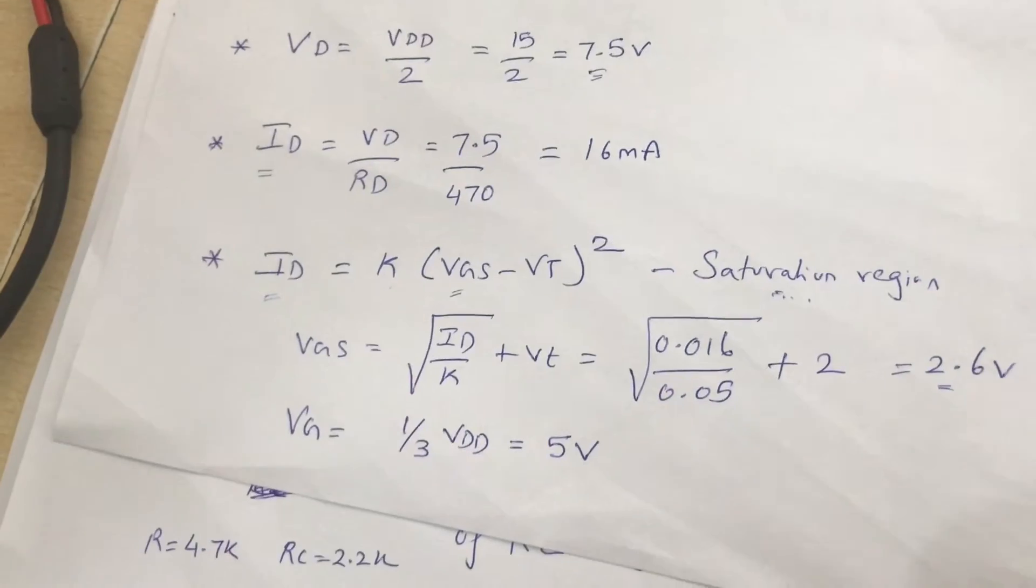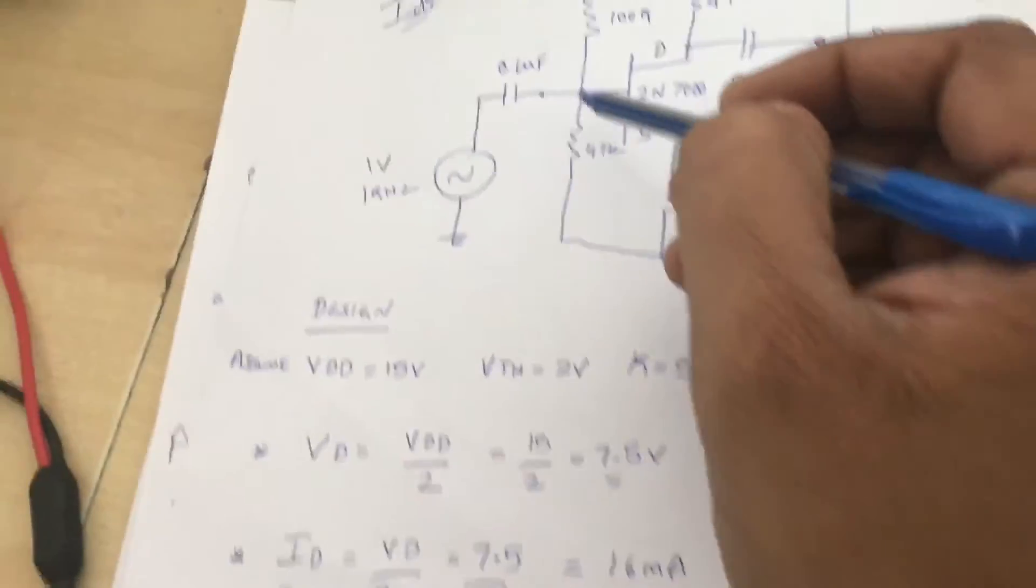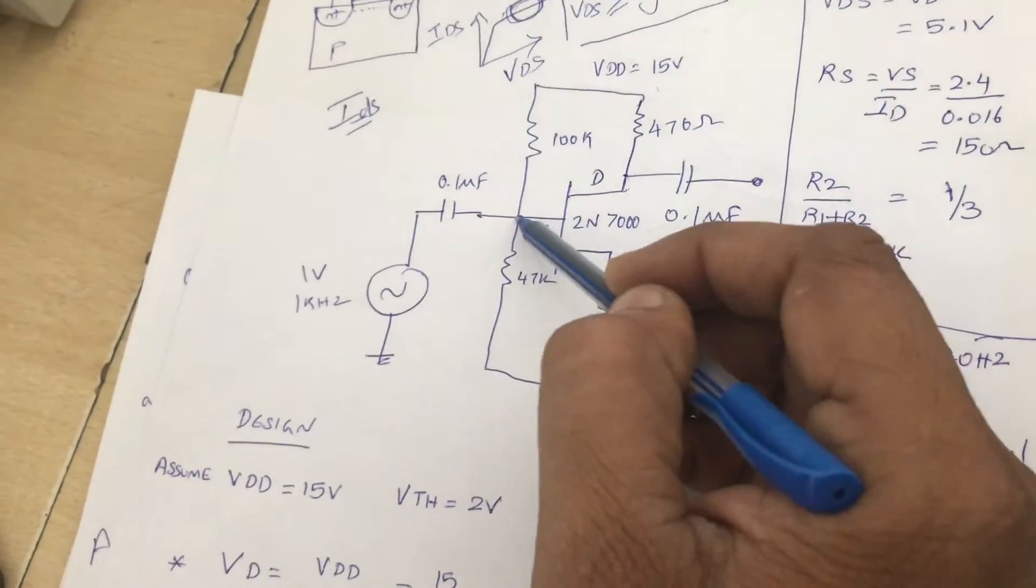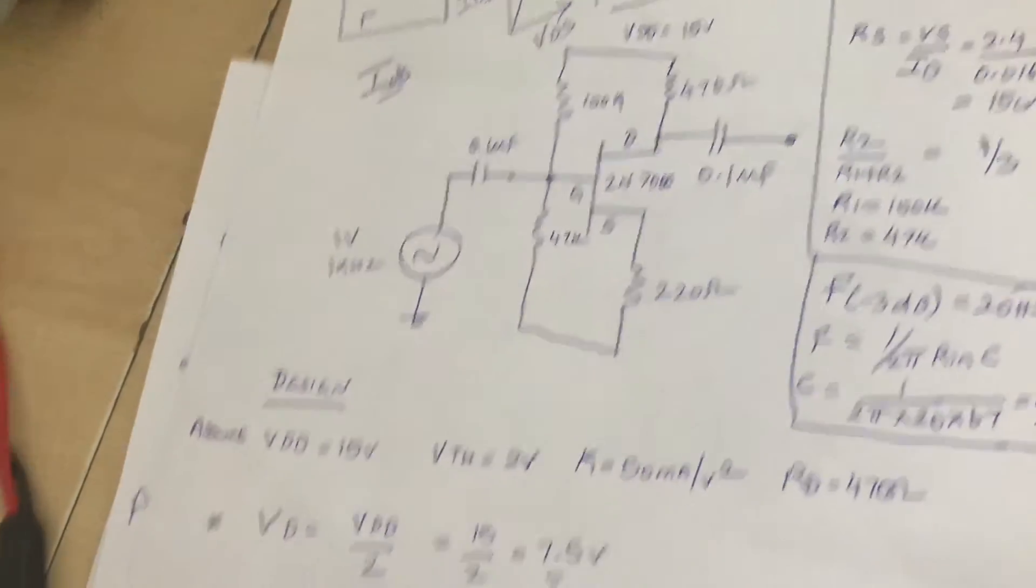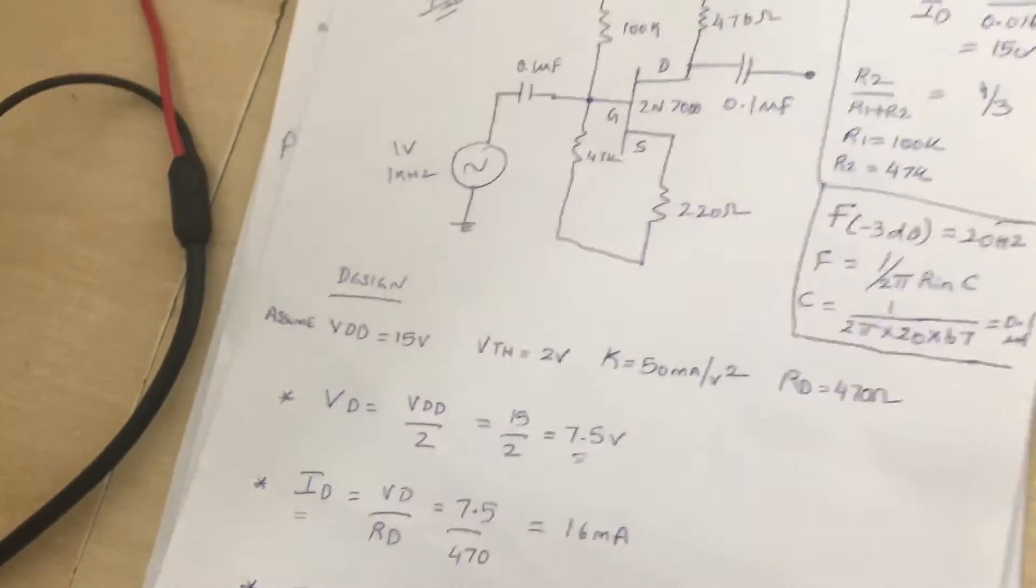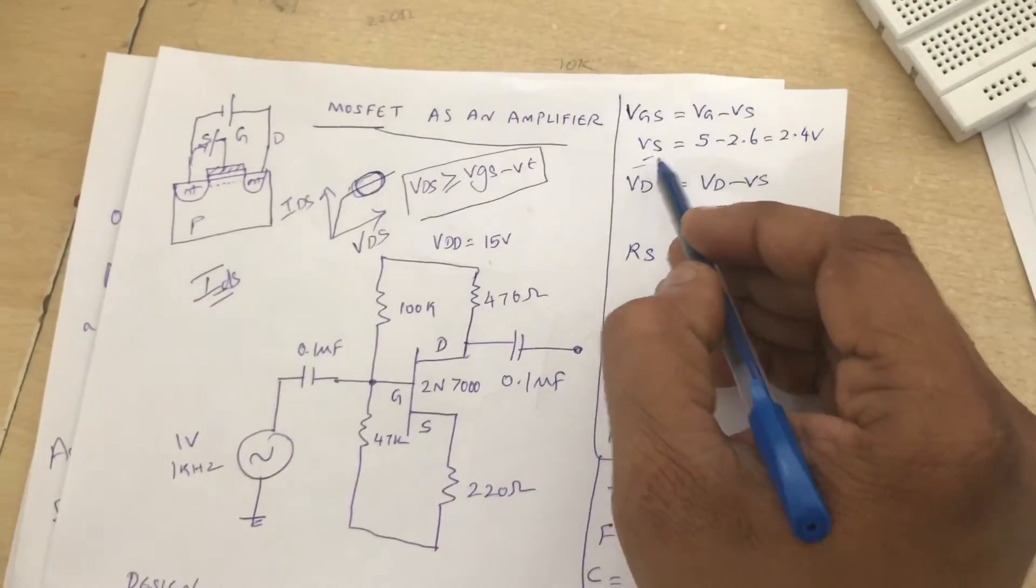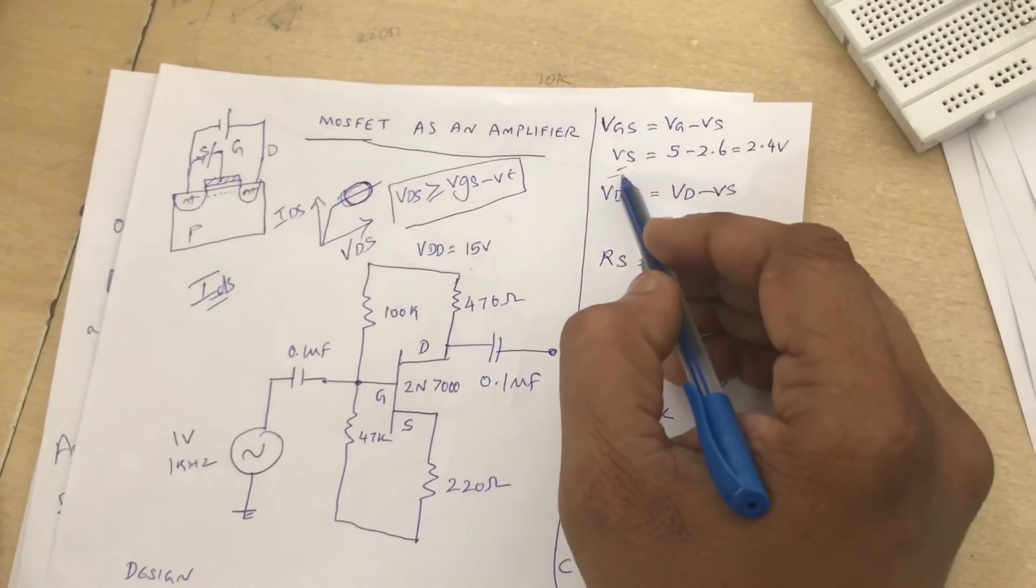On the input side, we are going to assume that the gate voltage with respect to ground is 1/3 of VDD, which is 5 volts. Now from this we can calculate VS. Since VGS is VG minus VS, VS is nothing but VG minus VGS, which comes to 2.4 volts.